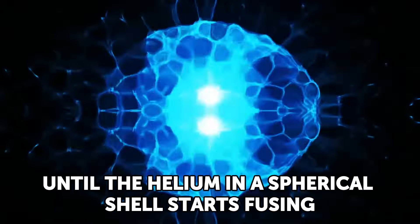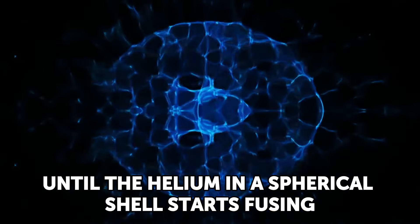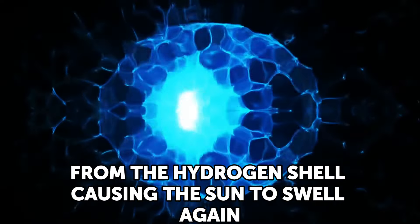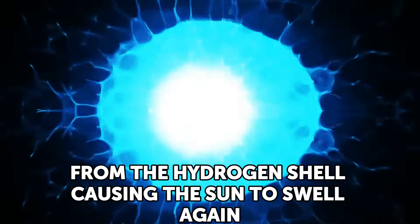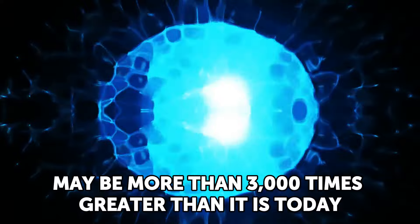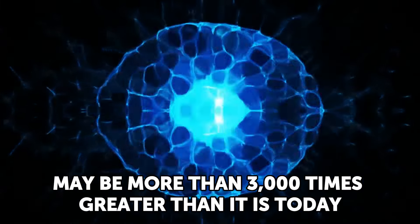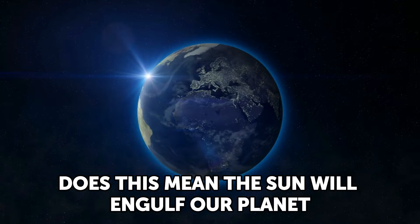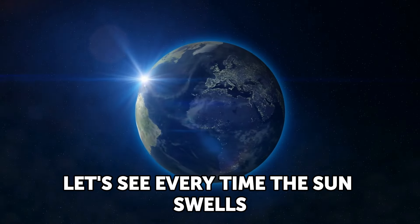First, the helium runs out, and fusion stops in the carbon and oxygen core. It contracts and heats until the helium in a spherical shell starts fusing. The energy from this shell adds to that from the hydrogen shell, causing the sun to swell again even more than the first time. This time, its outer layers may reach beyond Earth's orbit, and its luminosity may be more than 3,000 times greater than it is today.